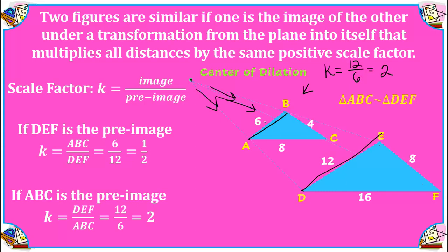We compare the image length of 12 to the pre-image length of 6, and this simplifies to 2 — so our scale factor is 2 and we enlarged each length by 2. Now let's talk about corresponding parts. The statement 'triangle ABC is similar to triangle DEF' is the notation for similarity.